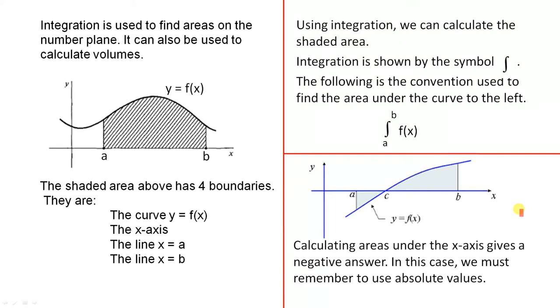Calculating areas under the x-axis gives a negative answer. In this case, we must remember to use absolute values, because we can't work with negative areas. We go through the normal procedure but must take absolute values, otherwise that will be a negative answer.